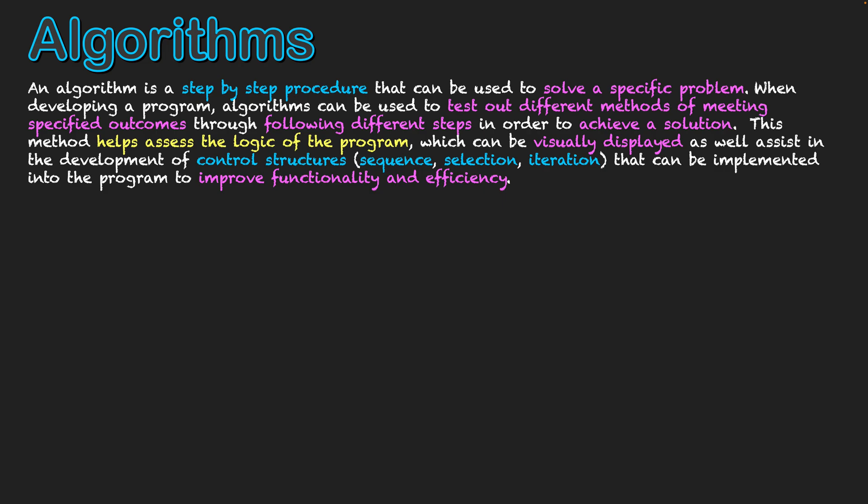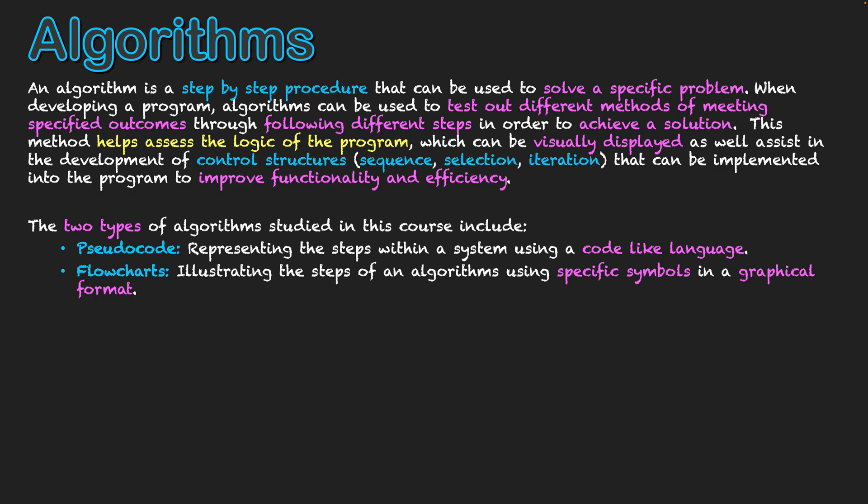We can display our algorithms in two different ways. That of using pseudocode, which represents the steps within a system using a code-like language. By pseudocode, it means it's not exactly a full programming language itself. It's kind of half English, but half-like coding language. It does this through using specific keywords that make it code-like, and those keywords are used in various forms, different types of programming languages.